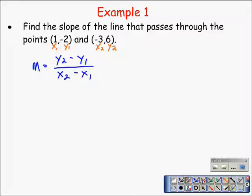When we substitute the values in, we go y sub 2 minus y sub 1. So that will give us 6 take away negative 2. Little mistake there, let's fix it. 6 take away negative 2, all over x sub 2 minus x sub 1 which would be negative 3 take away 1.